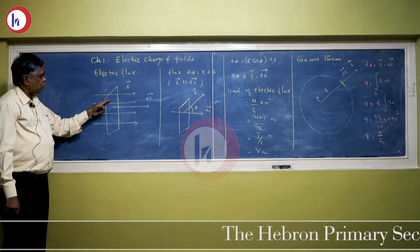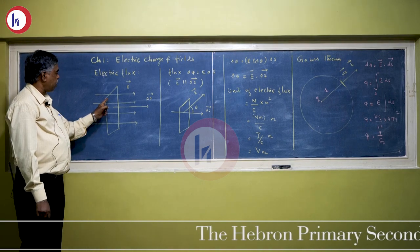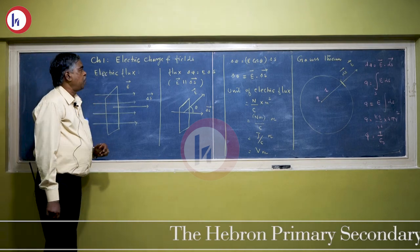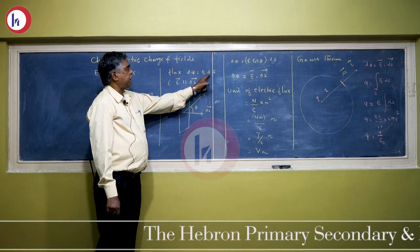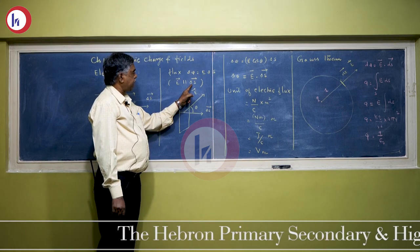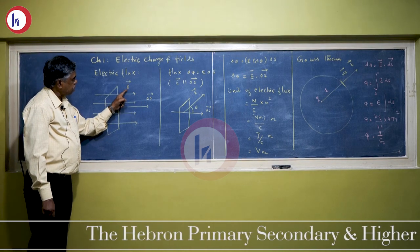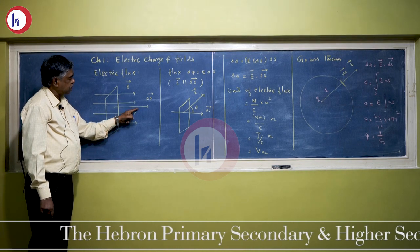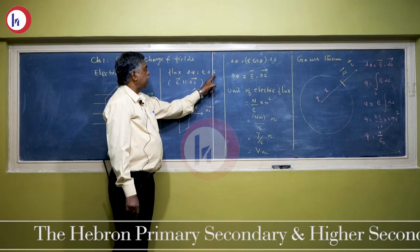The number of lines passing through a given surface perpendicularly is called flux, and this flux can be calculated with the formula: delta phi equals E multiplied by delta S. Here, E vector and delta S vector are both parallel. See this figure — the direction of E vector and the direction of delta S vector are both parallel. In this case, electric flux equals E delta S.